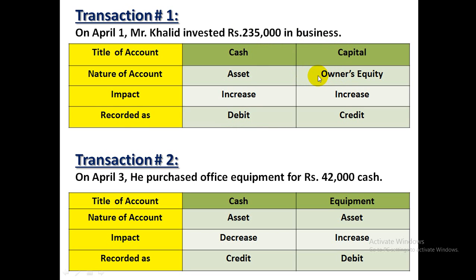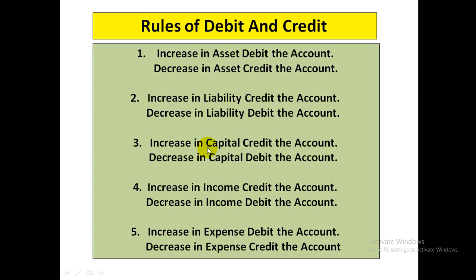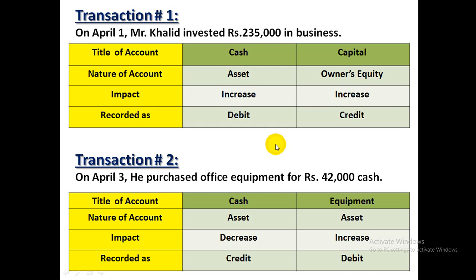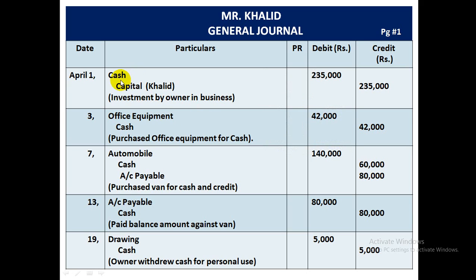Second account hai capital — jise hum owner's equity ya equity bhi kehte hain. Business me investment karne ka matlab hai capital increase hoga. According to rules of debit and credit, increase in capital should be recorded on the credit side. Therefore, capital is recorded on the credit side. Journal me recording: April 1 ki date likhen, cash ko debit column me likhen aur capital ko credit me.